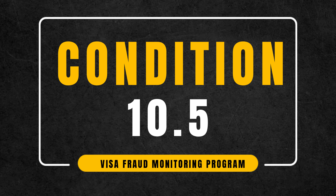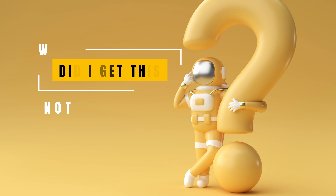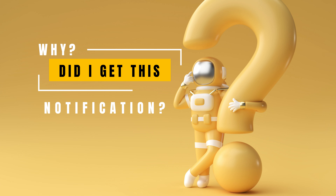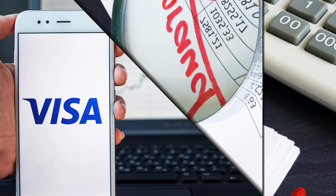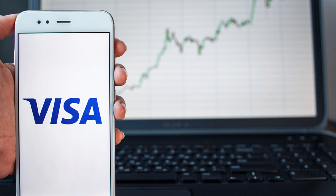Condition 10.5 Visa Fraud Monitoring Program: Why did I get this notification? Visa notified the cardholder's bank that the Visa Fraud Monitoring Program, VFMP, identified the transaction, and the cardholder's bank has not successfully disputed the transaction under another dispute condition.